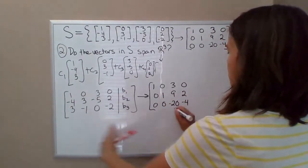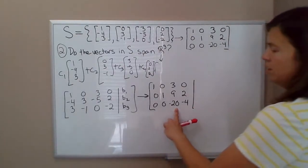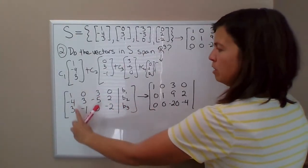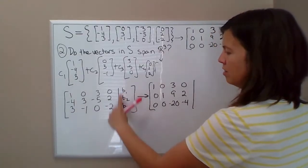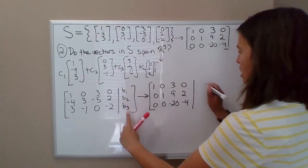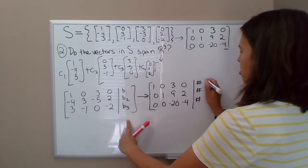Well we stopped here, we didn't bother getting a 1 in this position here. Now, as we did those row operations, so say 4 times row 1 plus row 2 and so on, the values here are going to get a bit scrambled. So you're going to have some number in each of these positions.